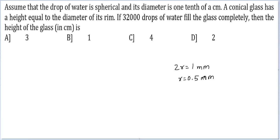A conical glass has height equal to the diameter of its rim. Let's look at a conical glass. It will be something like this, equal to the diameter. This is 2r. This is r. The height is 2r.